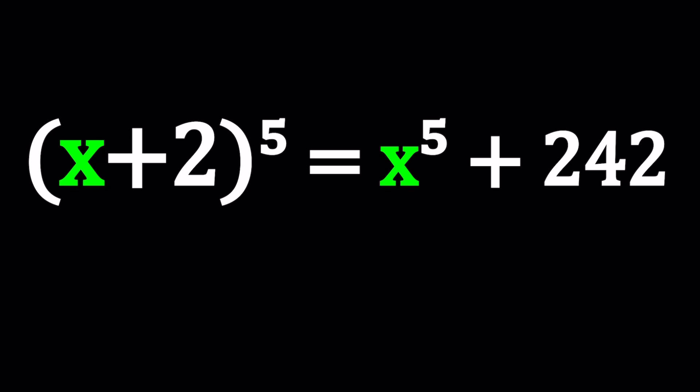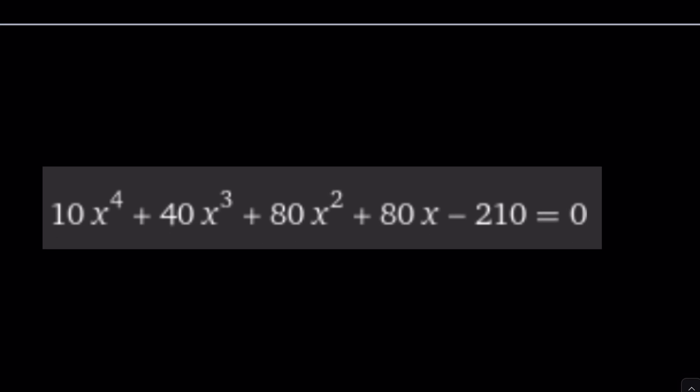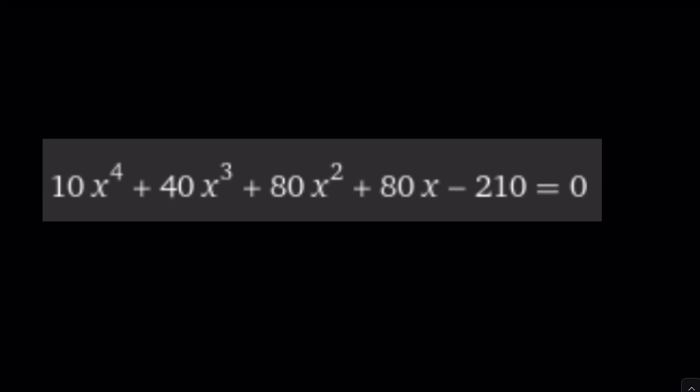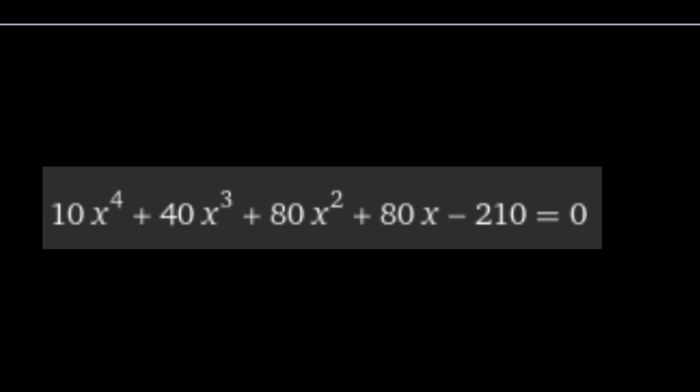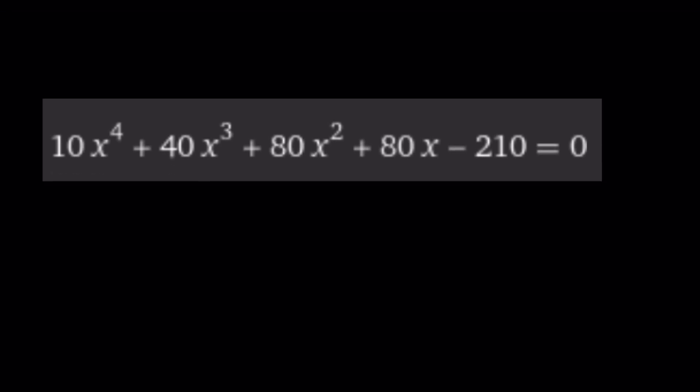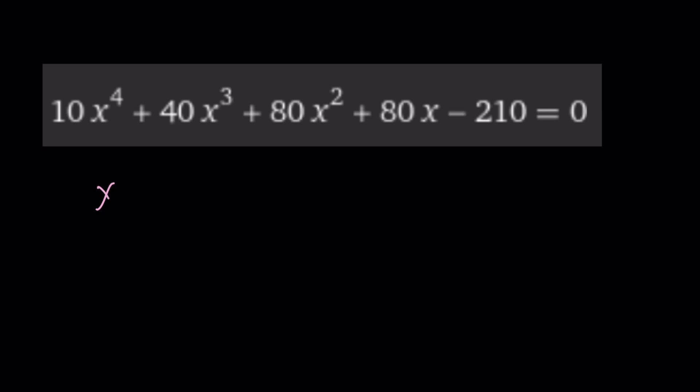Anyways, so when you expand it, this is not going to be a quintic because x^5 is going to cancel out. And when you do that, you're going to get something like this. Where does the 10x^4 come from? If you think about the binomial theorem, you're going to expand it and get something like this. Obviously, we can divide everything by 10 and get something that looks a little nicer, just a tiny bit, right? It's still a quartic, but it's just going to look a little nicer, something like this.